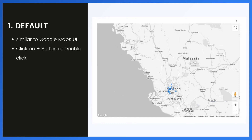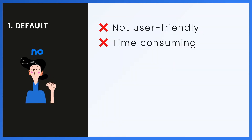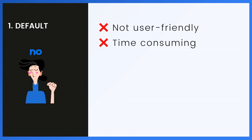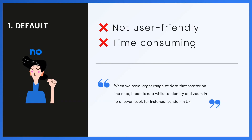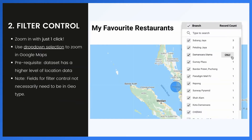However, the default setting is not user-friendly and very time-consuming — especially when we have a larger range of data that's scattered on the map. It can take a while to identify an area and zoom in to a lower level, for instance London in the UK.